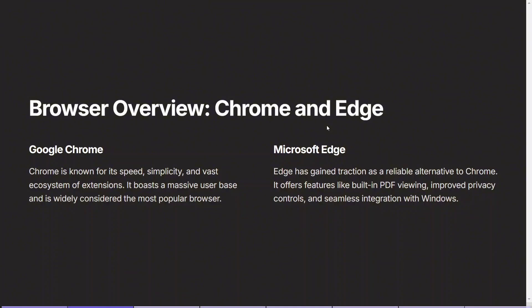Let's begin with a general overview of both browsers. Google Chrome has long been the market leader, known for its speed, simplicity, and vast extension ecosystem. It is widely used due to its clean interface and compatibility with a wide range of devices. On the other hand, Microsoft Edge has rapidly evolved as a strong contender, with built-in features like PDF viewing, improved privacy settings, and seamless integration with Windows, establishing itself as a reliable alternative especially for Windows users.